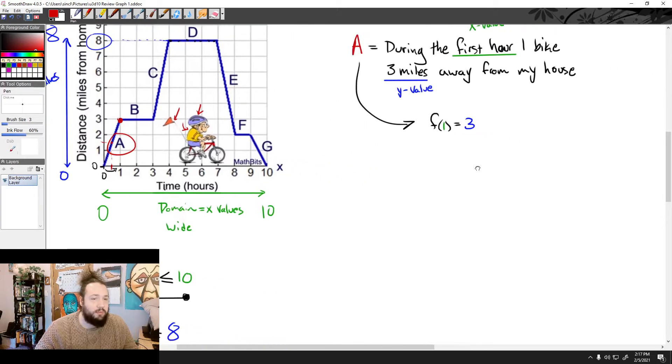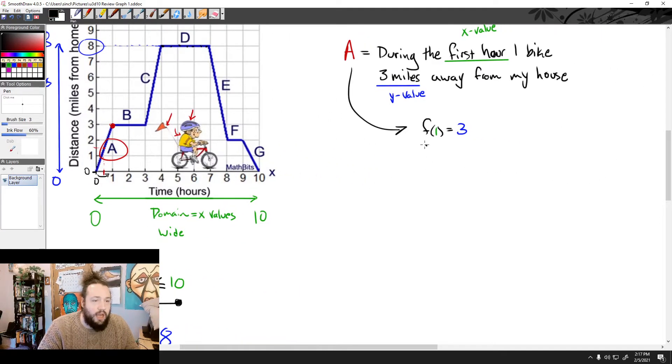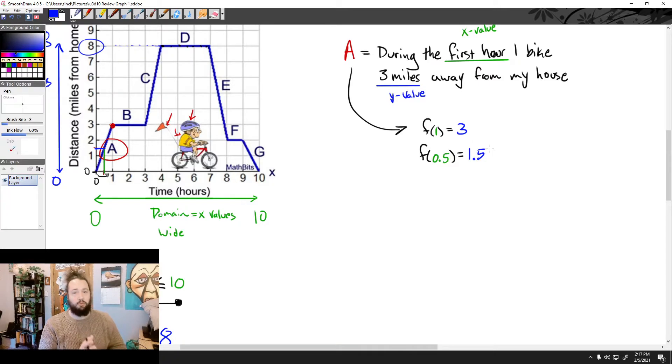Okay? So I could even say something like this. So I could say F of half an hour, which is 0.5, equals, and then if I go up, so here, let's take this. We go up to this point. That would take me over to this point, which is about 1.5. So I'd have 1.5 here as my output. So you can find these input-output pairs during any of these sections.